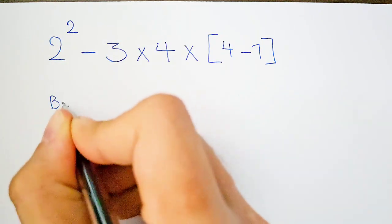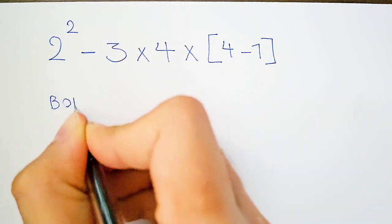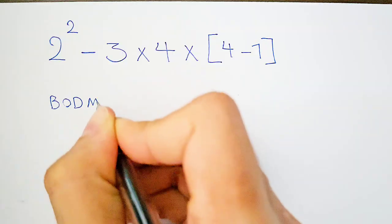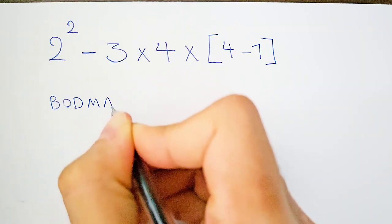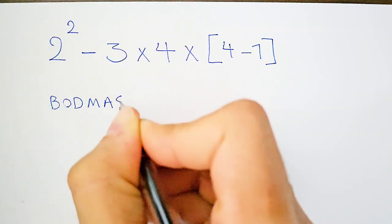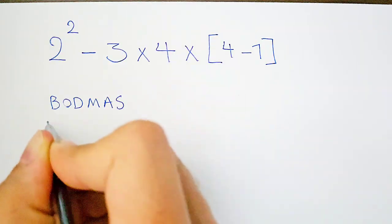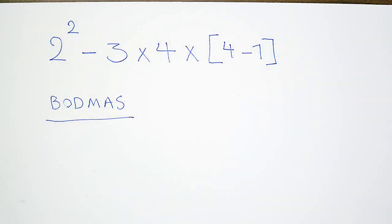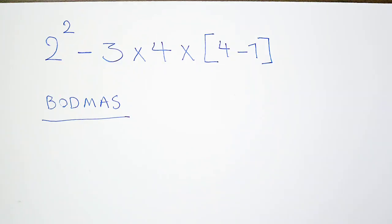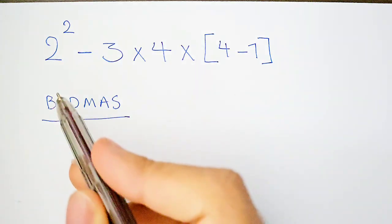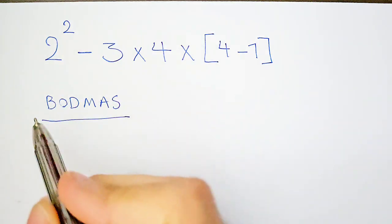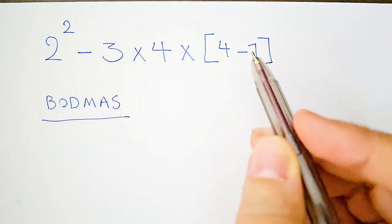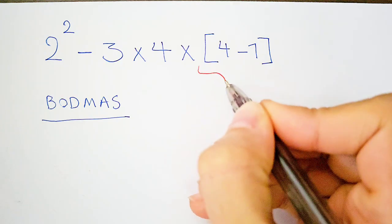The rule is called BODMAS. B stands for Bracket, O stands for Order, D stands for Division, M stands for Multiplication, A stands for Addition, and S stands for Subtraction. First, we simplify the bracket.